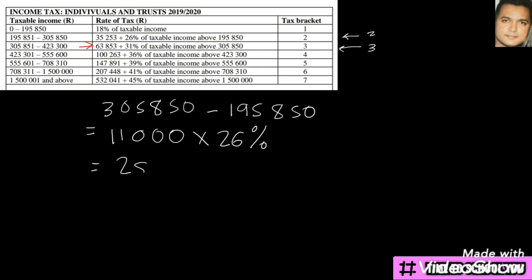And it will be an amount of 28,600. Now that we found this, we look at tax bracket two.